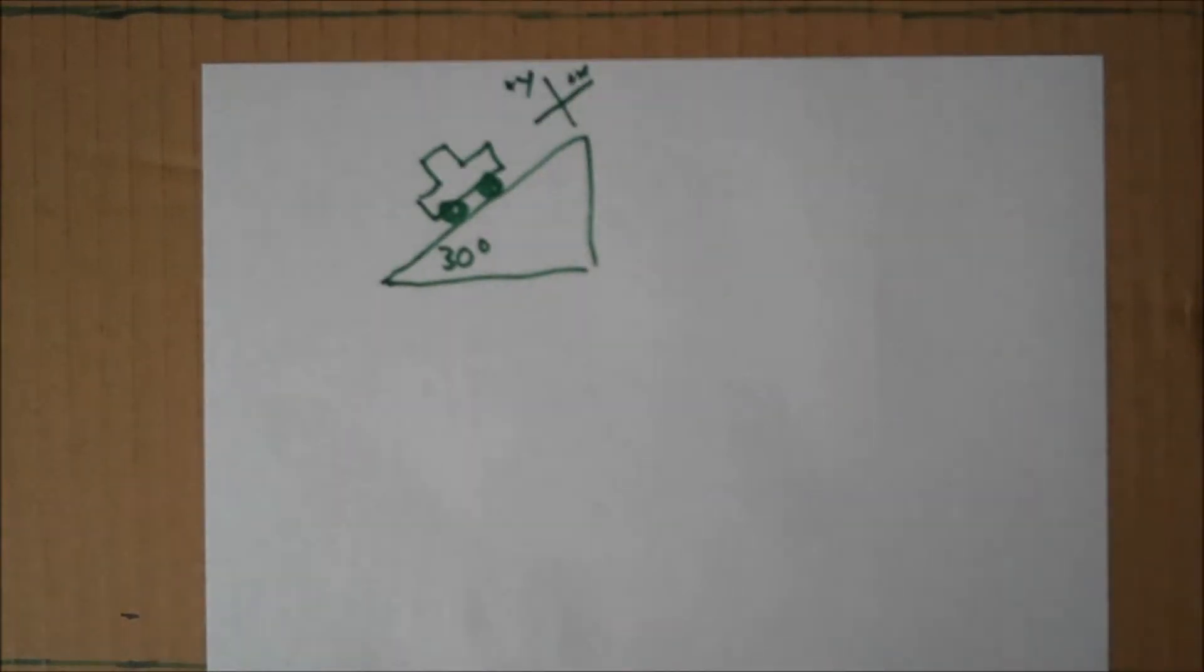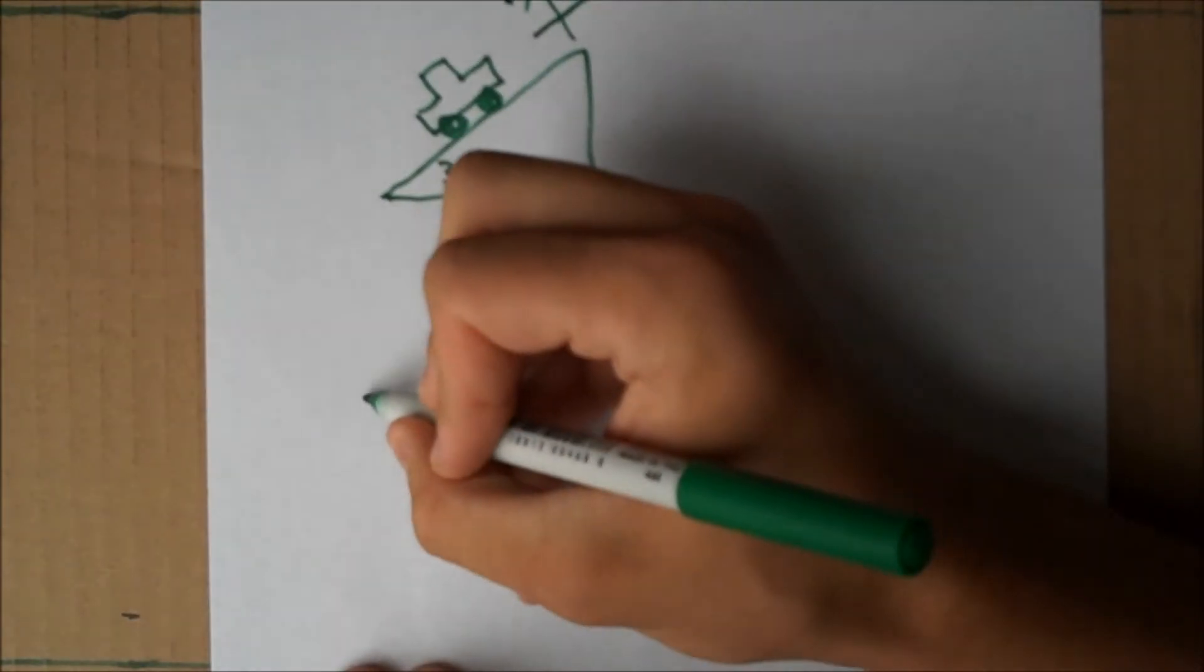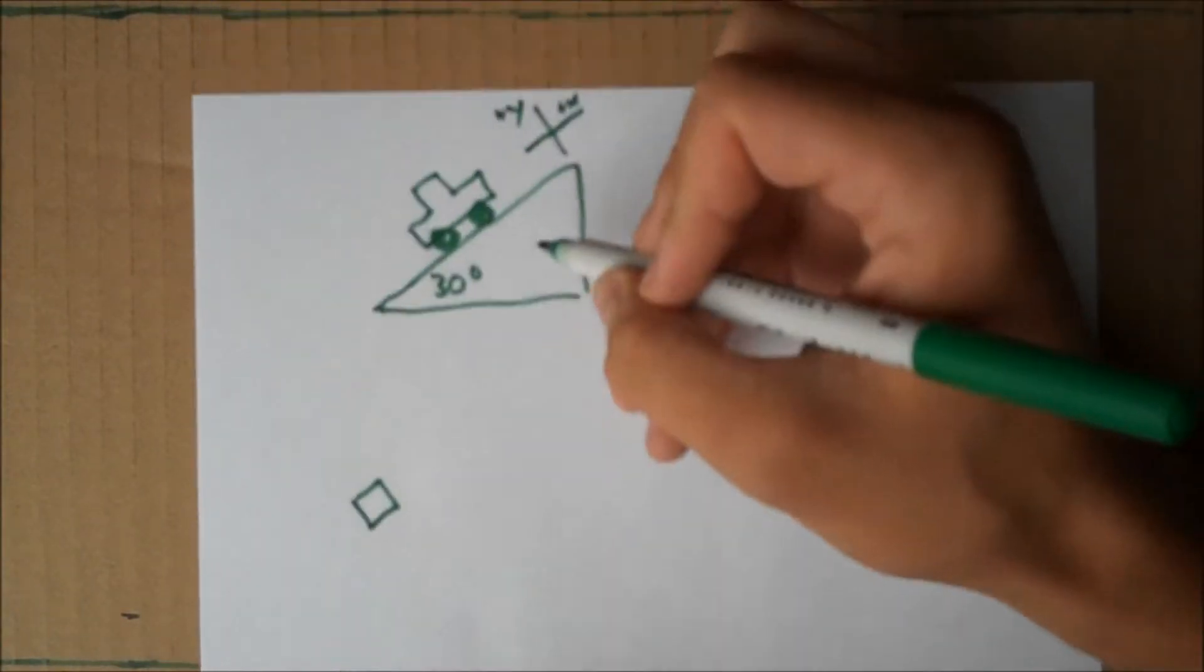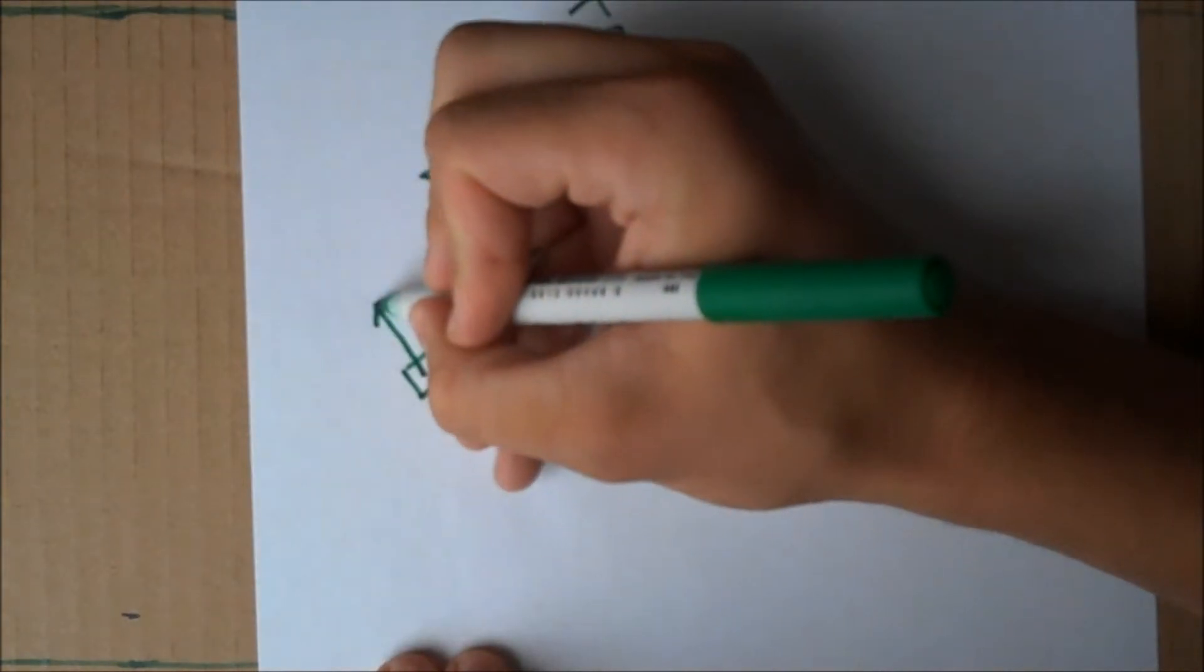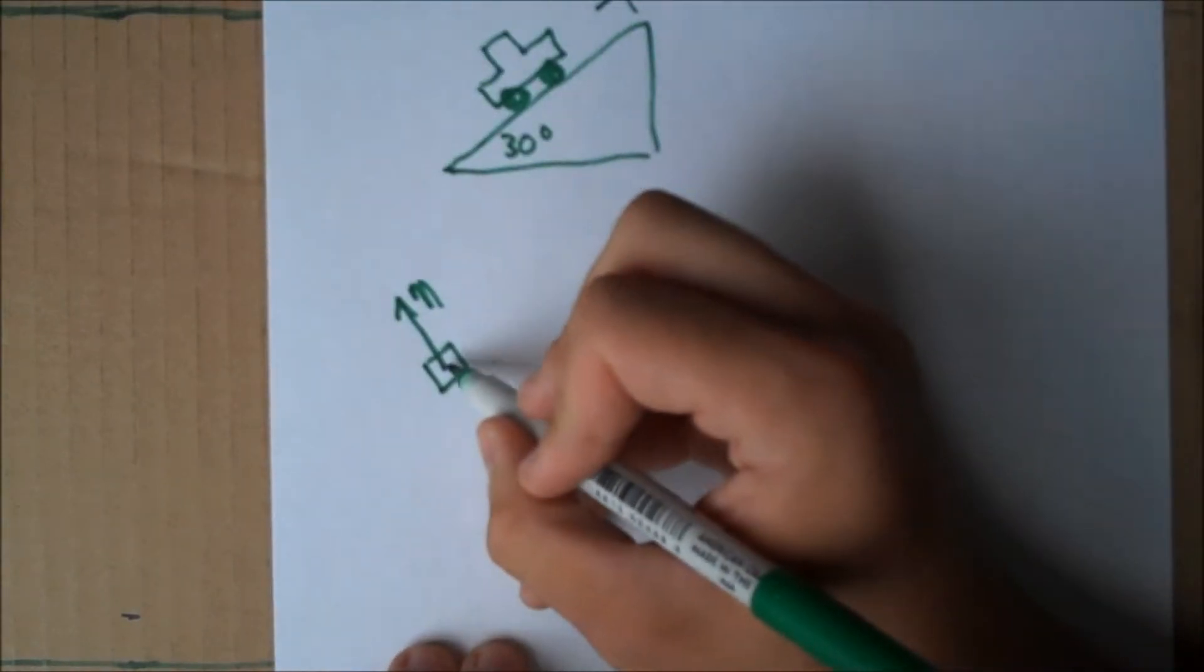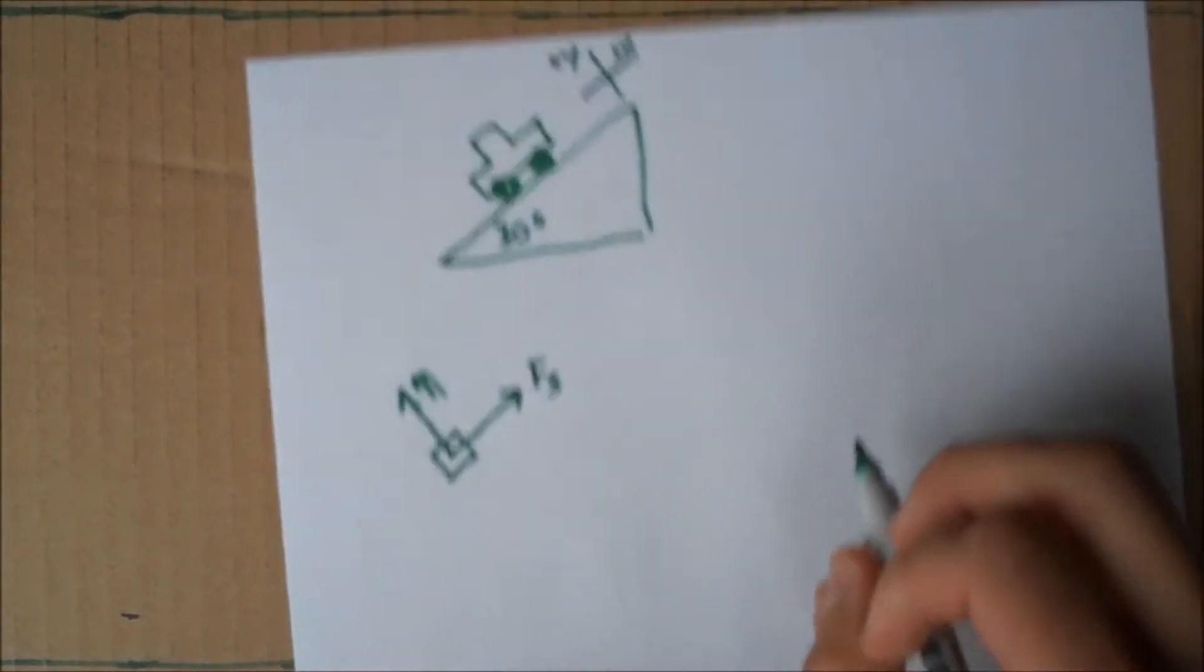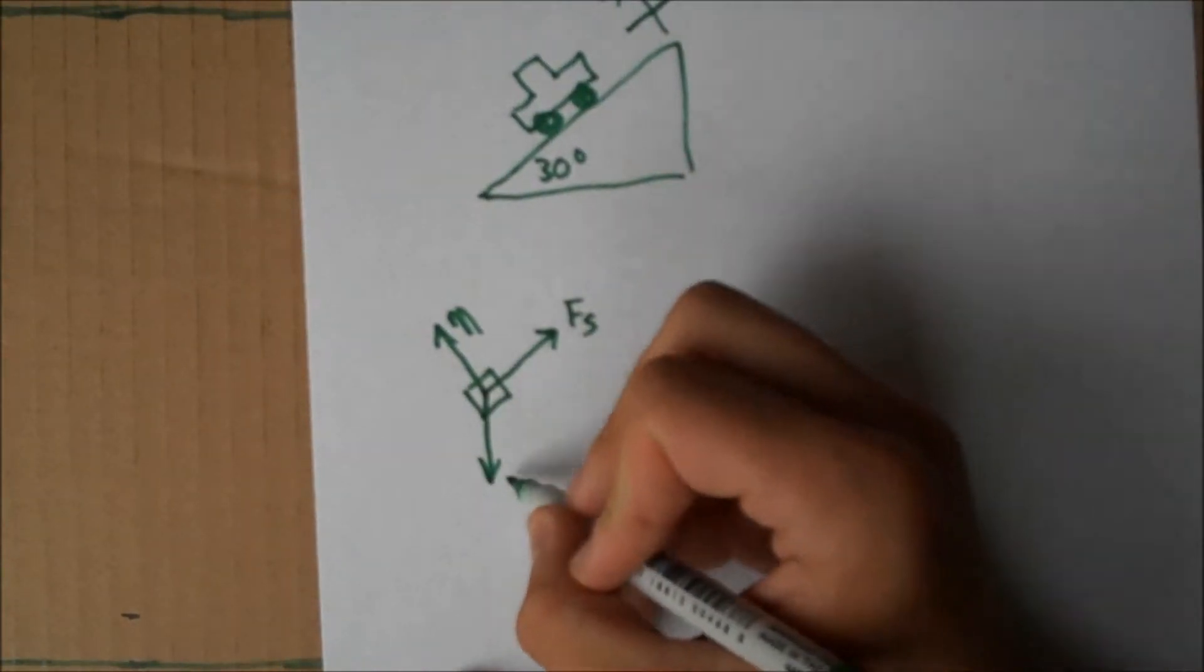After we have labeled our coordinate axes, it's time to set up our free body diagrams. We want to set it on the 30 degree angle. The force that's pushing up on the car from the ground is the normal force. The force holding the car up is the force of static friction. And the force pulling the car down is gravity, which pulls straight down.